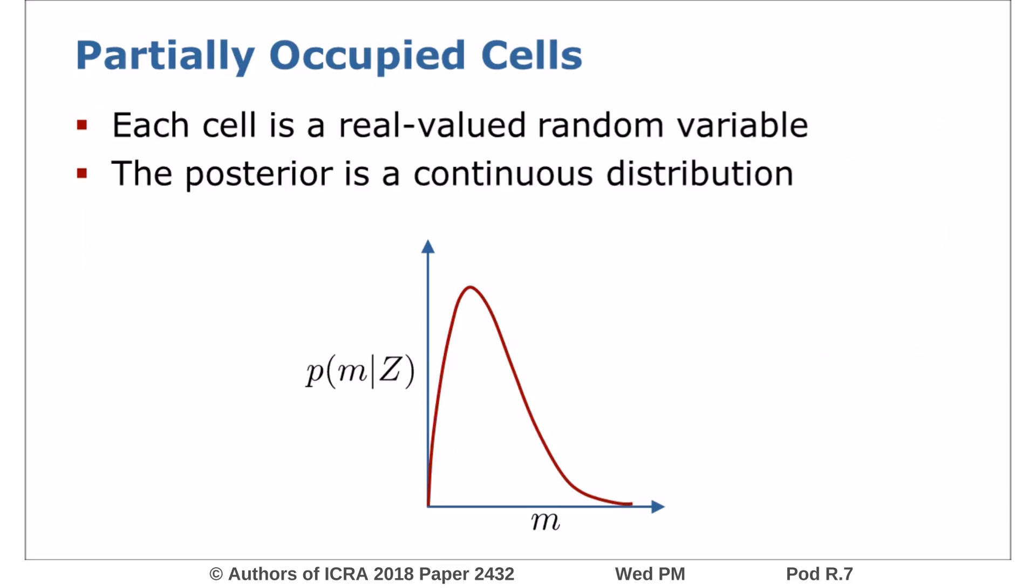To account for such partially occupied cells, we model each cell as a real valued random variable. The posterior over this map value is then a continuous distribution. Note that this formulation is different from traditional occupancy mapping, where the random variables are binary and the corresponding posteriors are real valued occupancies.